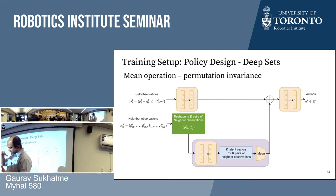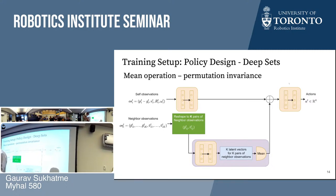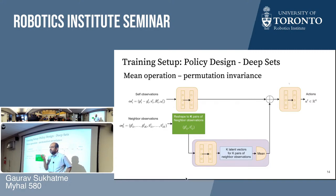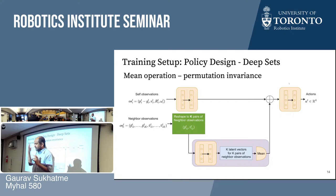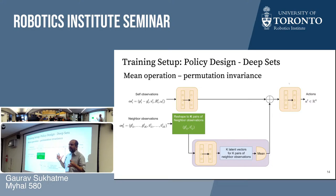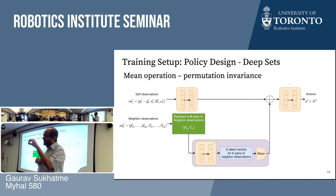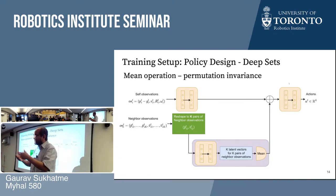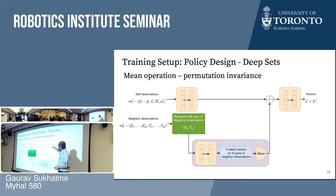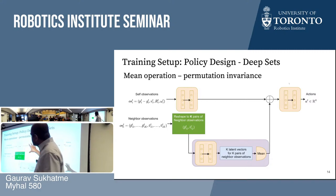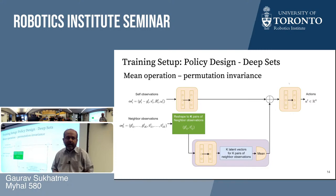One approach: take the neighbor observations, build a low-level embedding of each, then sum those embeddings — a mean operator, which is permutation invariant — and use that combined with self-observations to predict actions. This is a deep sets style technique. There's a natural reason to want permutation invariance: there's no particular reason neighbor one should be more important than neighbor two — at least not immediately.